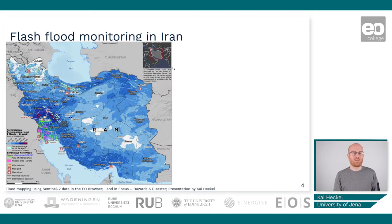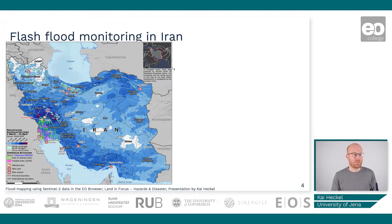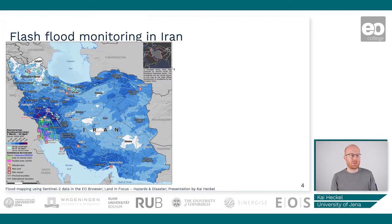This map shows the accumulated precipitation in Iran from the 1st of March to the 14th of April. You can see that there was a lot of precipitation, especially in the more elevated areas. There were severe floodings already in the western and southwestern part of Iran in the Khuzestan province, and strong precipitation could also be found in the northern province Golestan, which will be part of this tutorial as we take a closer look at the city of Agala. It was quite an extreme situation with precipitation not usual for this short period of time.